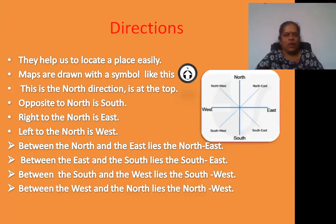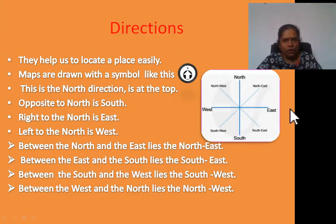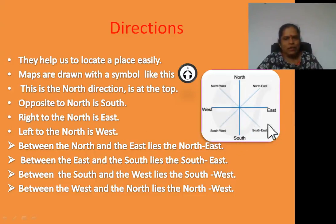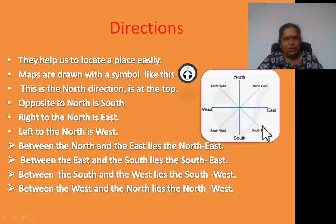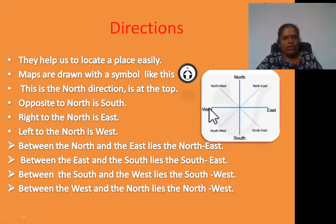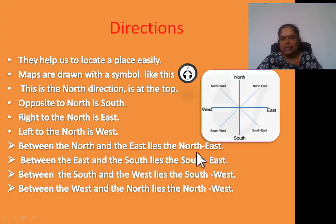Okay students, these are the four main directions: north, south, east and west — called the four main directions. Northeast, southeast, southwest and northwest are called sub-directions. North, south, east and west are called main directions. Northeast, southeast, southwest and northwest are called sub-directions.